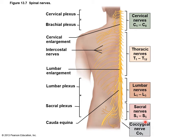These spinal nerves are grouped into plexuses: a cervical plexus, a brachial plexus, a lumbar plexus, and a sacral plexus. We're going to talk about the important aspects of these four different plexuses.